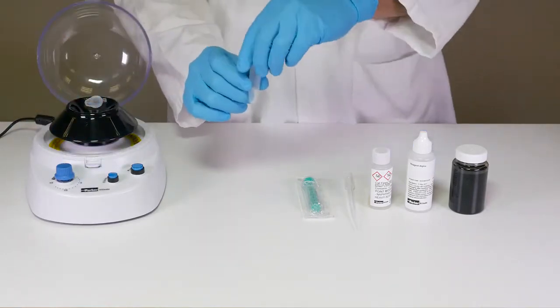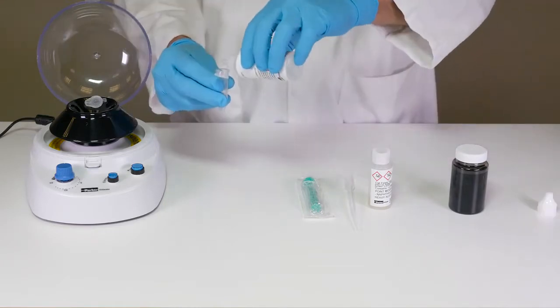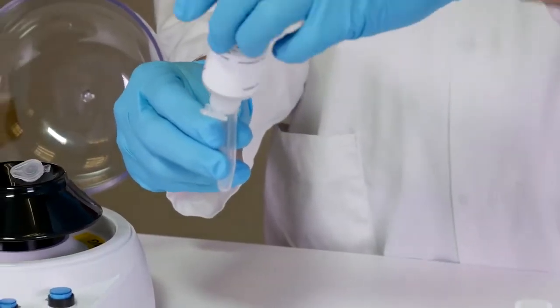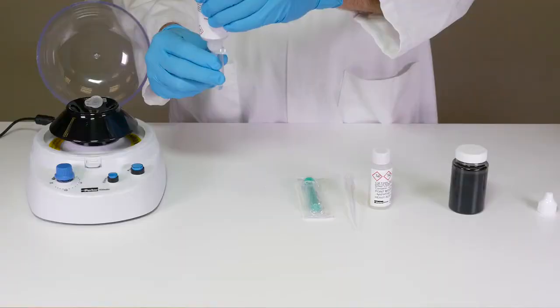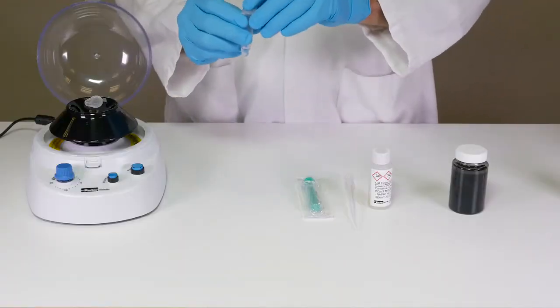Next, fill a second test tube to the 0.5 milliliter graduation line with reagent alpha. Place the tube in the centrifuge opposite the first.